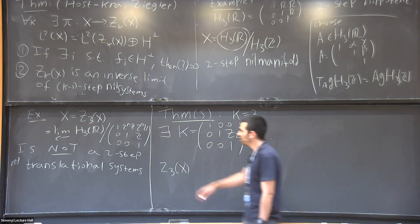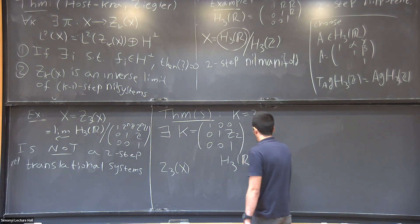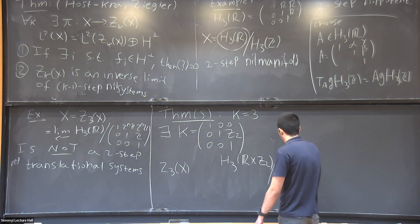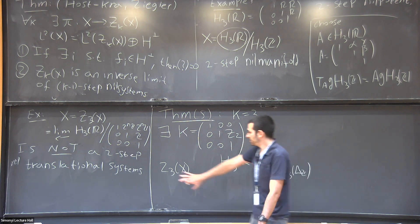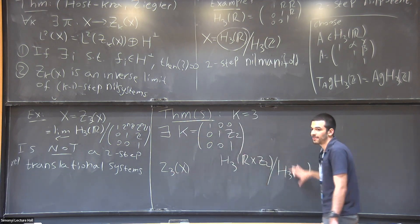And then, so originally what I proved is that you can take any system Z_3(X) and extend it to a translational system. So instead of this Heisenberg group over R, you can take Heisenberg group over R times the 2-adic integers, and then you need a quotient by some discrete subgroup, so let me not define it. And this extends Z_3(X). Z_3(X) is a factor of a system like that.